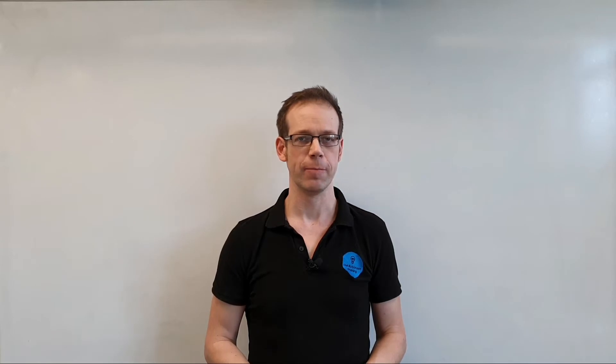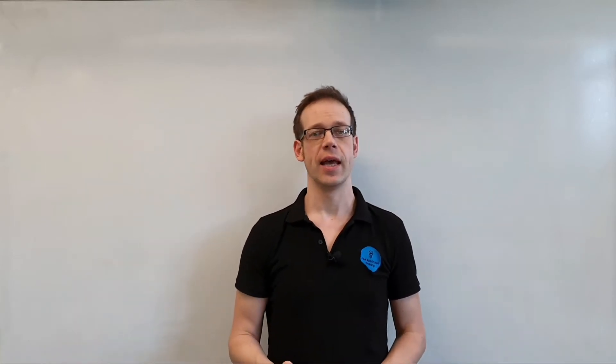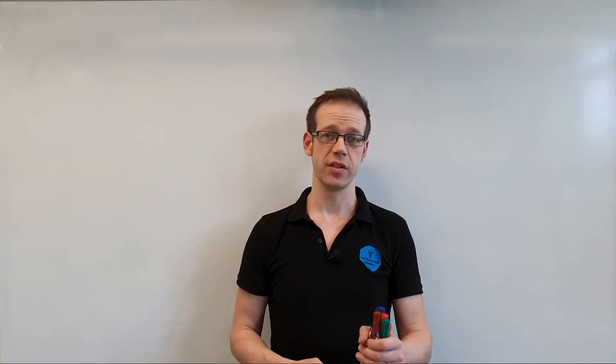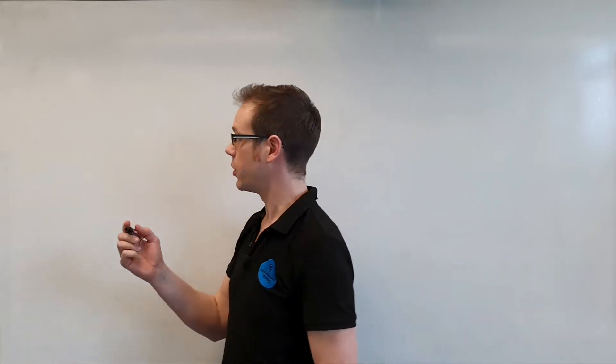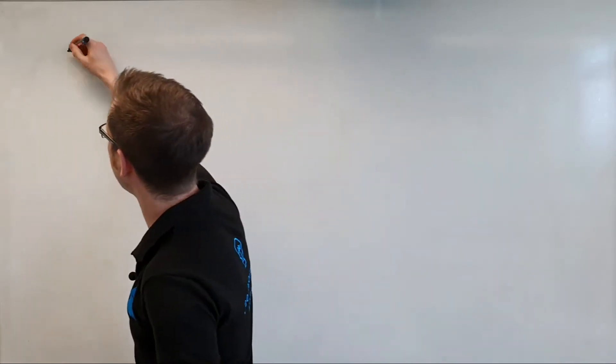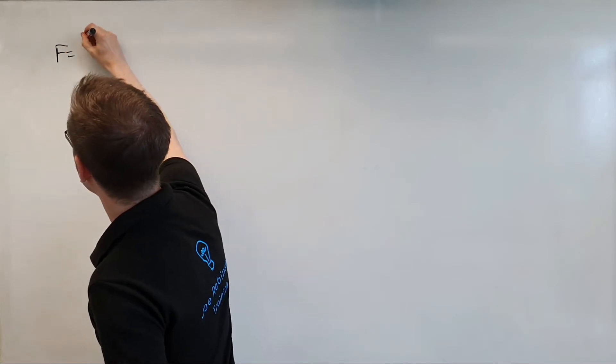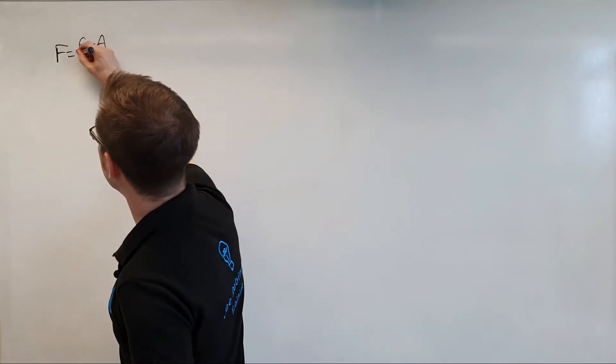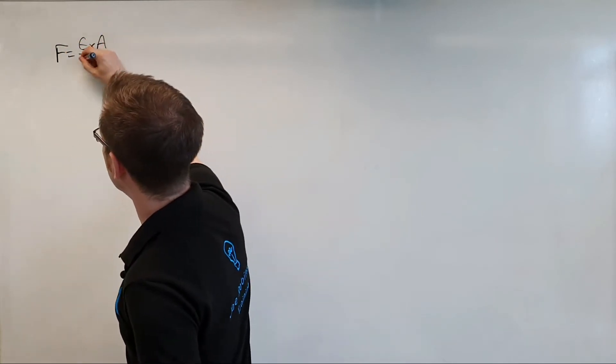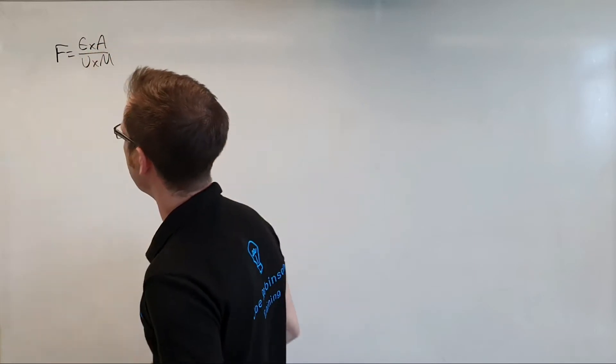So there's an awful lot of information and numbers there, so how are we going to go about solving this question? To answer it we need to use the luminous flux method, so we start by writing down: F is equal to E times A, divided by U times M.